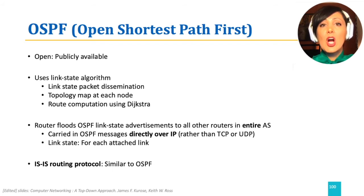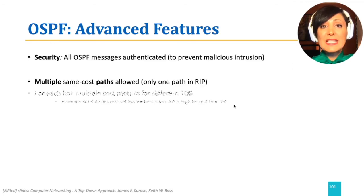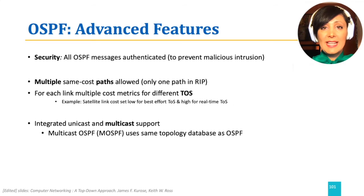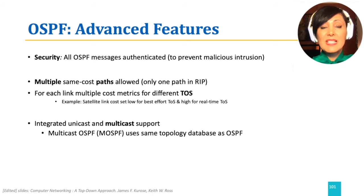OSPF messages are sent directly over the IP protocol. Some of the important features of OSPF are security, support of ECMP, and multicast. All OSPF routers are authenticated to prevent malicious intrusion by unknown routers, and messages can also be authenticated with shared secrets, adding to the security of the network.